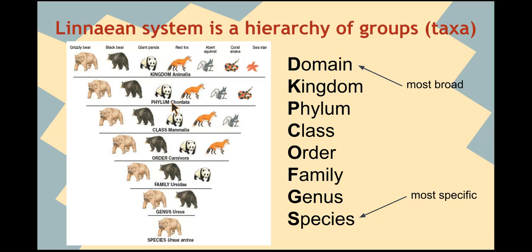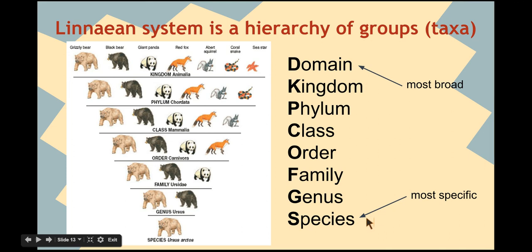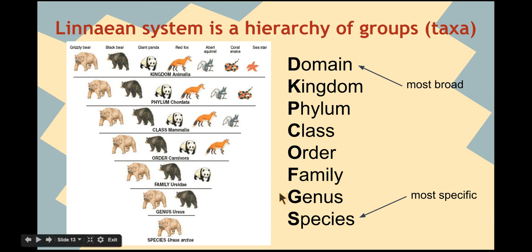Here's the Linnaean hierarchy. He established groups called taxa. The first and most broad is domain — being in the same domain tells you very little about what you have in common. There are three domains. Next are kingdoms — there are six kingdoms. Going down and getting more specific: phylum, class, order, family, genus, and species. Species is the most specific: if you are the same species as something, you can reproduce and your offspring will also be able to have babies of their own. Our binomial nomenclature scientific names come from genus and species — that's where we get our scientific names.